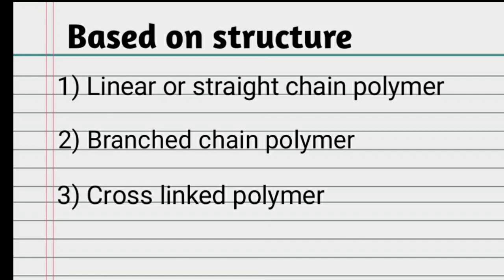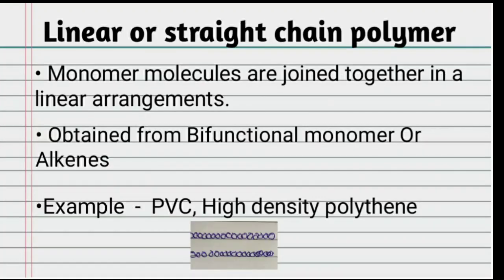The third type is cross-linked polymer. In a linear or straight chain polymer, monomer molecules are joined together in a linear arrangement, obtained from bifunctional monomers or alkenes.